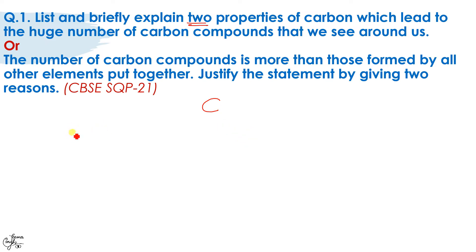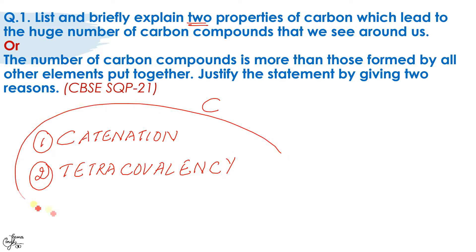So basically the two reasons are: one, catenation, and then in one line you will explain what catenation means. And the second one, tetracovalency of carbon. This also you will explain in a line or maybe with an example. These are the two major reasons why carbon shows millions of compounds. Although there are other reasons, for example formation of multiple bonds, small size of carbon, but they are minor reasons.